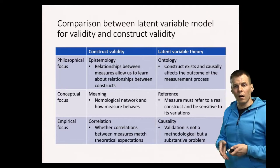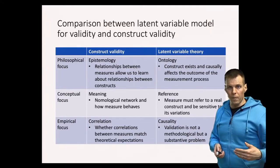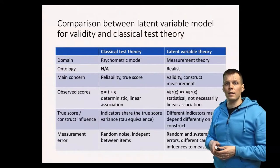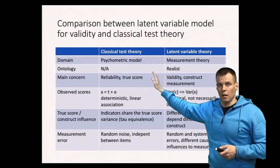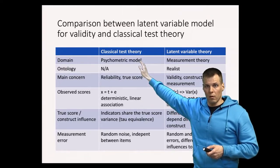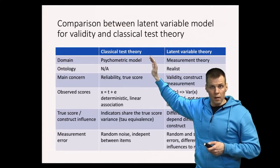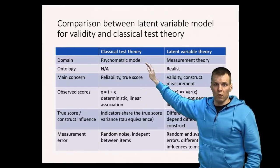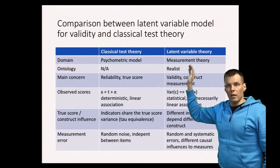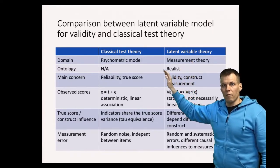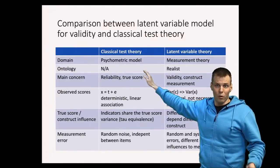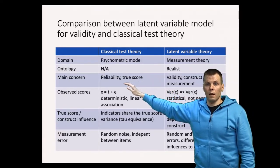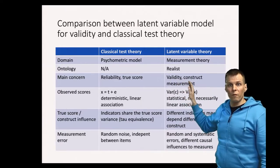Both approaches are useful: if your measures don't behave as expected, that's reason to suspect they may not be valid, but ultimately that is not sufficient — you have to argue the causal process. We can also compare the latent variable theory with classical test theory, which gives us the definition of reliability. Classical test theory is a psychometric model, not a measurement theory — its scope is narrow, describing how people respond to surveys or psychological tests. Latent variable theory is a measurement theory taking a realist ontology.